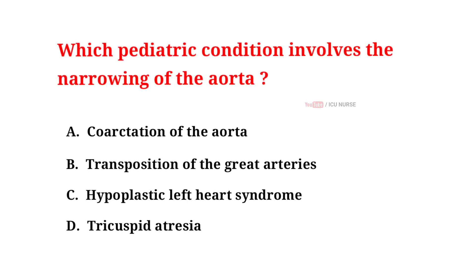Which pediatric condition involves the narrowing of the aorta? A. Coarctation of the aorta. B. Transposition of the great arteries. C. Hypoplastic left heart syndrome. D. Tricuspid atresia.